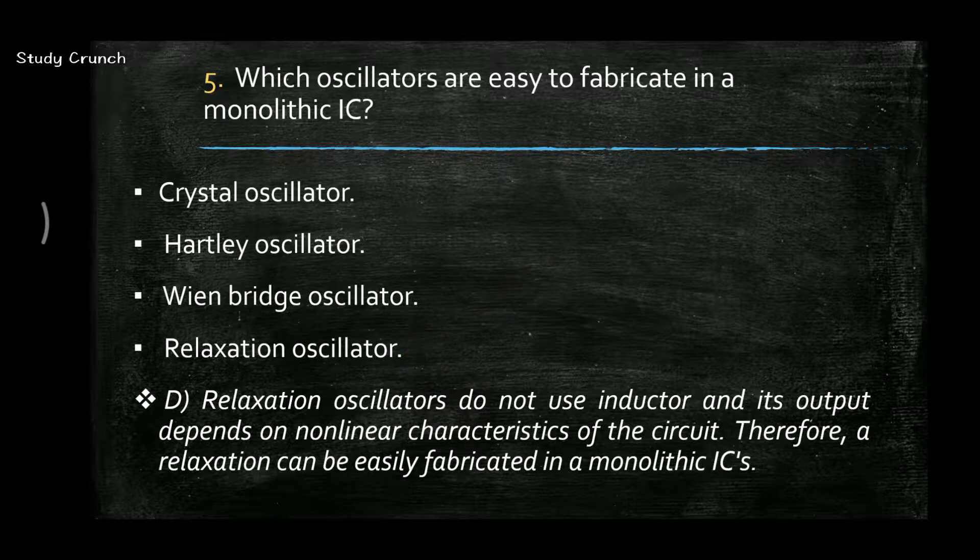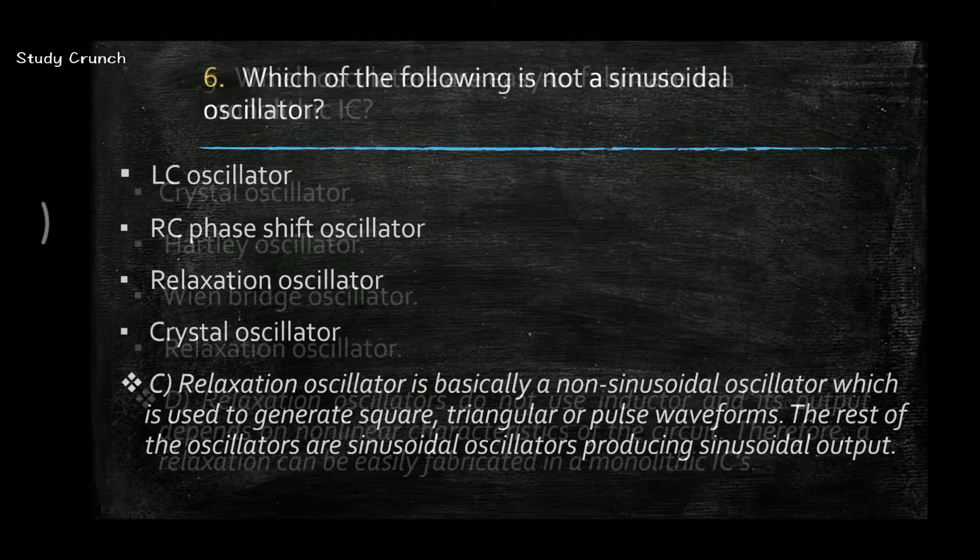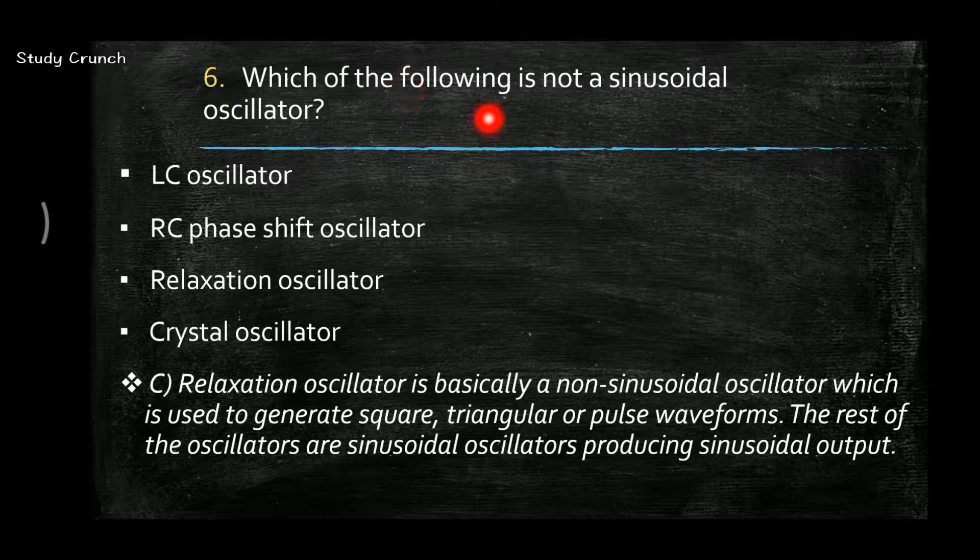Next question: which of the following is not a sine oscillator? The answer is C, that is relaxation oscillator. Basically it is a non-sine oscillator which is used to generate square, triangular, or pulse waveforms, and all of the others are sine output waveform generators.